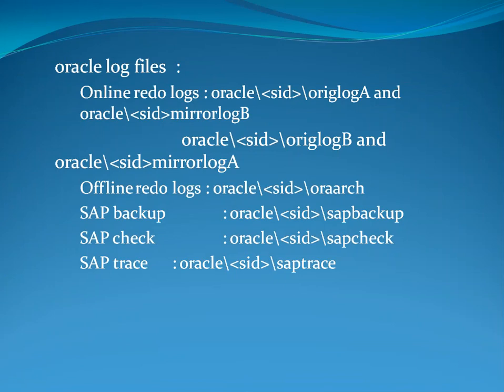Oracle Log Files come in two types: Online Redo Logs and Offline Redo Logs. Online Redo Logs are stored in Oracle SID Orig Log A and Oracle SID Mirror Log B. Next are Oracle SID Orig Log B and Oracle SID Mirror Log A.